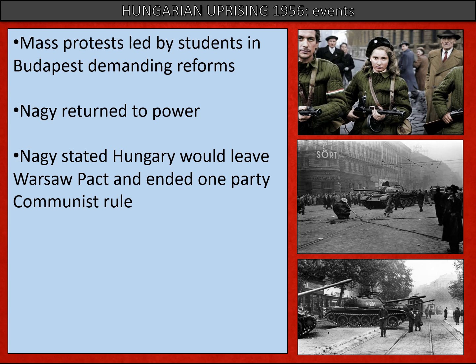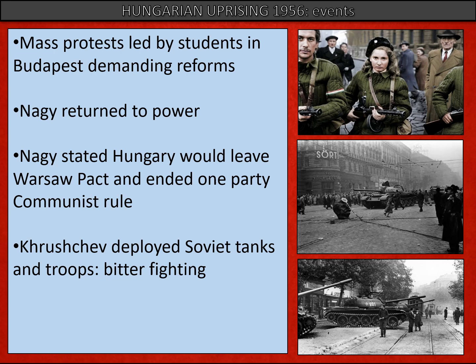But there were two things in particular that pushed Khrushchev over the edge: firstly, a statement that Hungary would leave the Warsaw Pact, the communist military alliance; and secondly, that one-party rule would end and opposition political parties would be allowed. It was this that really pushed Khrushchev towards direct intervention. Soviet tanks that had been waiting at the border rolled into Hungary. There was bitter fighting and lots of deaths, but eventually, and fairly rapidly, order was returned with overwhelming force on the Soviet side, and communist control was re-established.